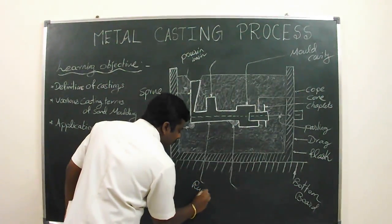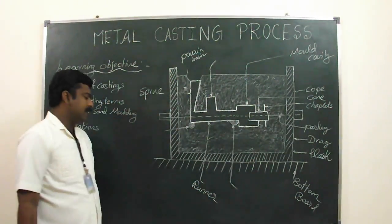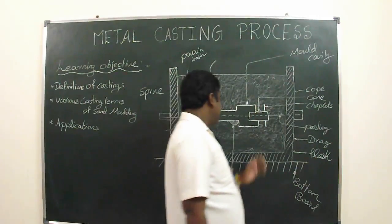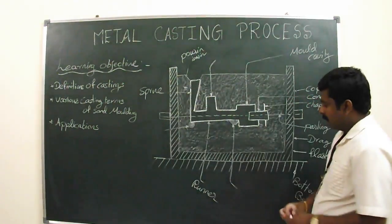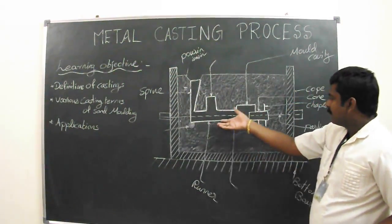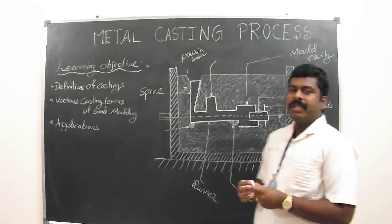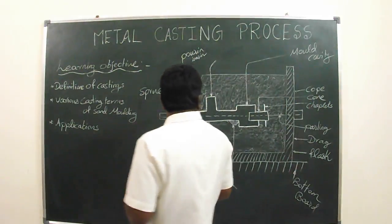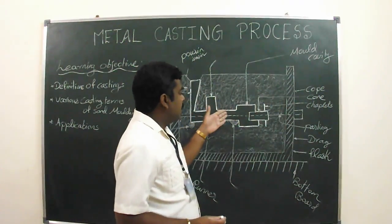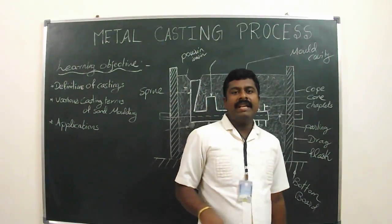Next one is the runner. Runner is the passageways of the parting plane through which the molten metal flows to the mold cavity before they regulate it. The runner regulates the molten metal flowing into the mold cavity.